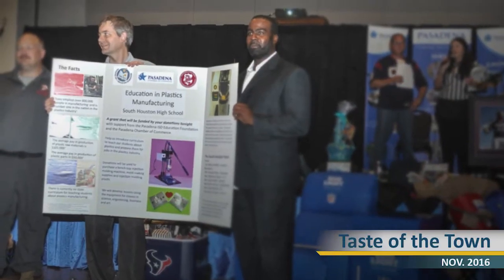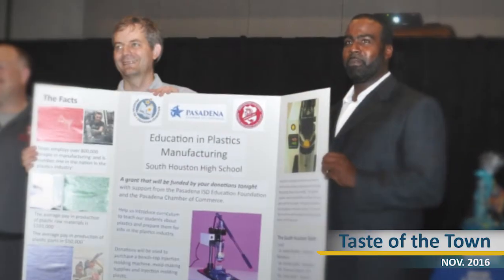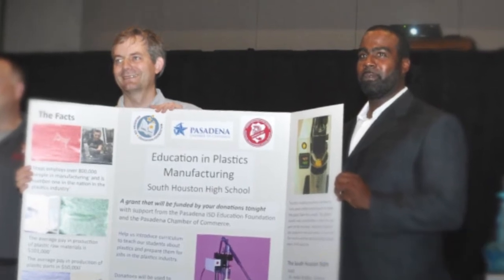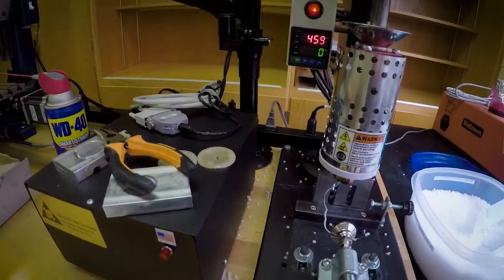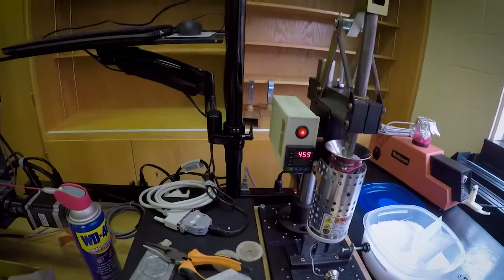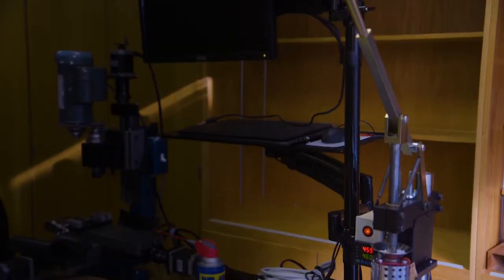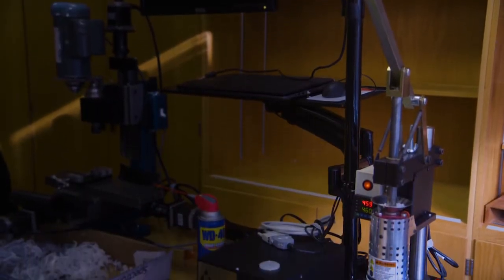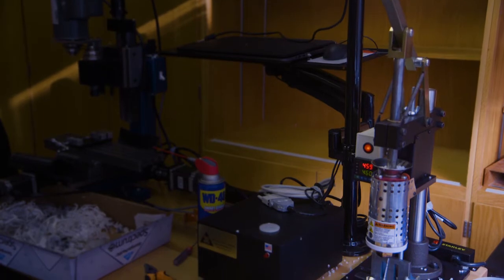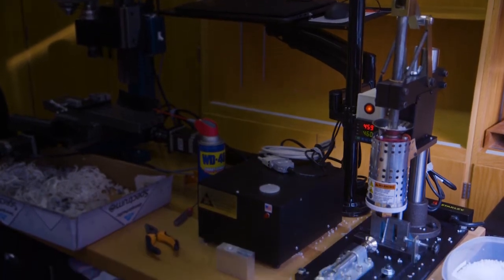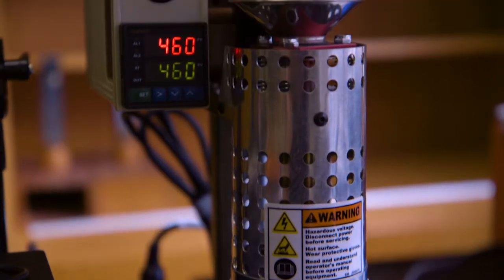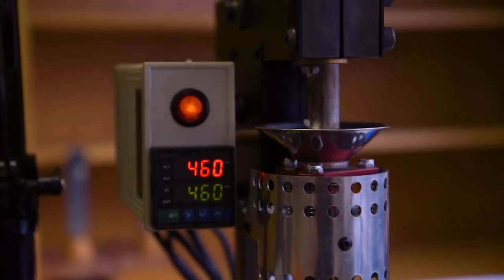We were fortunate enough to be awarded an auction grant at Taste of the Town 2016 and with those funds we were able to get a model 150A hobby scale injection molding machine from L&S Technologies. An injection molding machine is probably one of the most important industrial manufacturing tools for making things out of plastic.